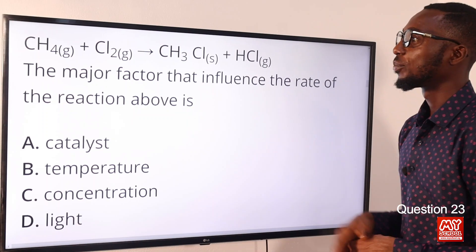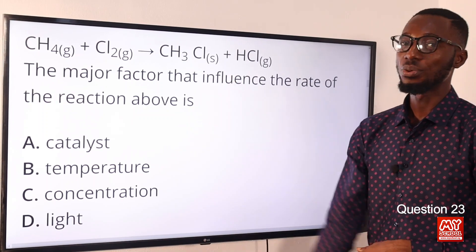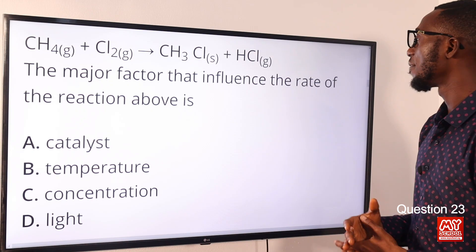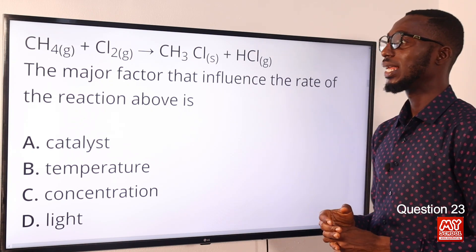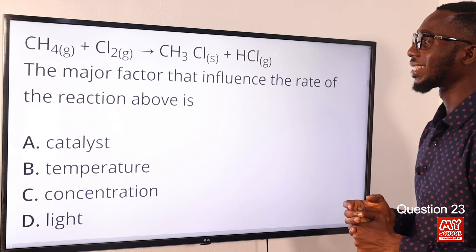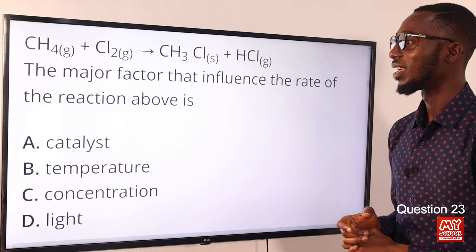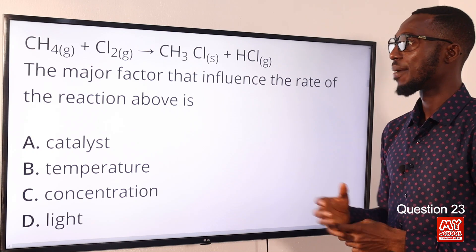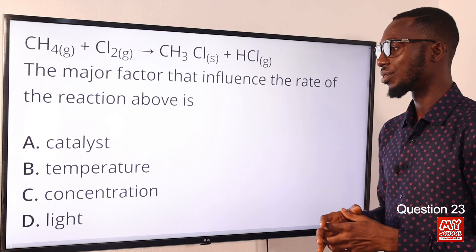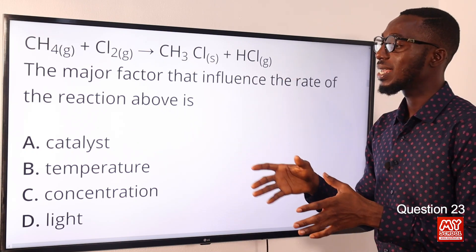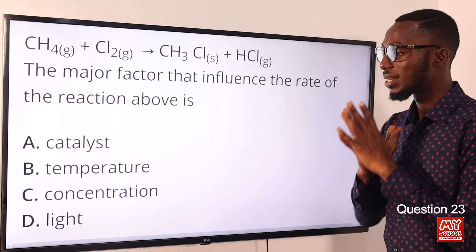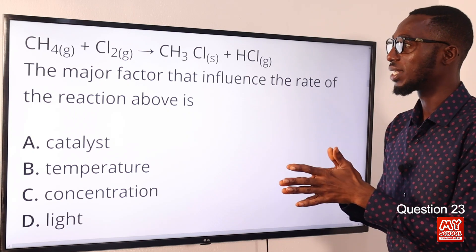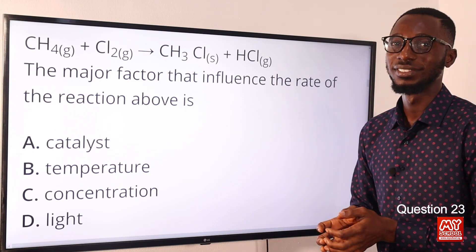Question 23: We have methane reacting with chlorine gas. The major factor that influences the rate of this reaction is ultraviolet light — that is the catalyst. This is a chlorination reaction between methane and chlorine, and the catalyst is ultraviolet (UV) light. That can be found in option D. Option D is the correct answer.